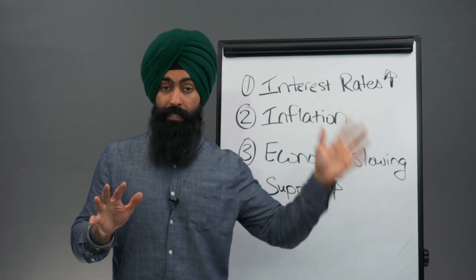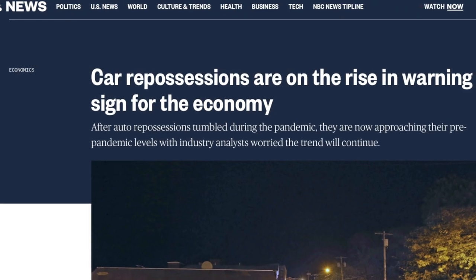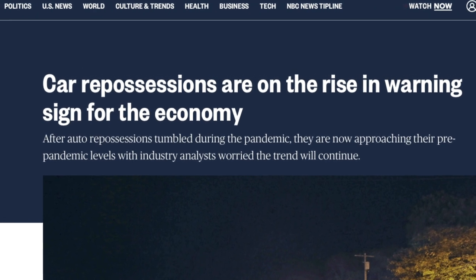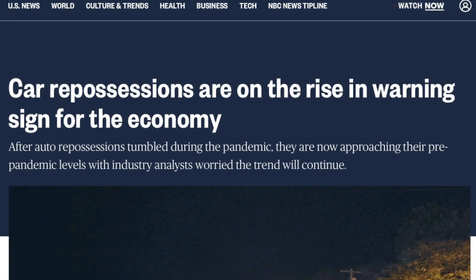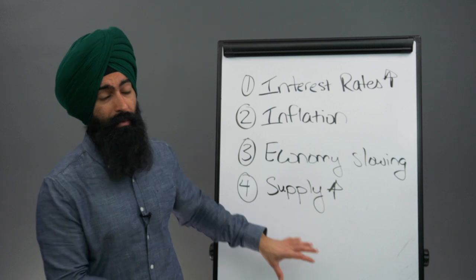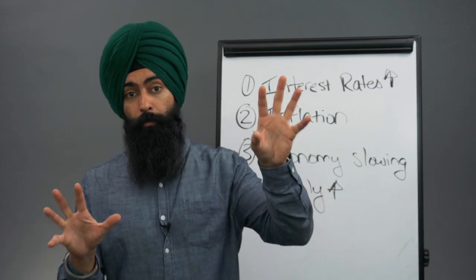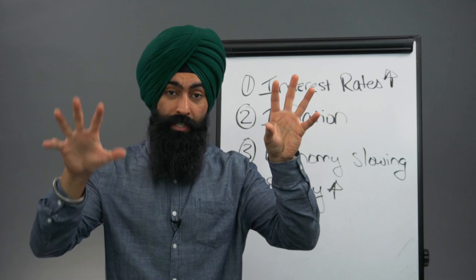Now, sure, the supply isn't a ton, but it's starting to go up. Not to mention the fact that we're also starting to see more car repossessions because the economy is slowing, which is also starting to increase the supply. But we're starting to see supply start to trickle upwards while the demand to buy a car is going down.